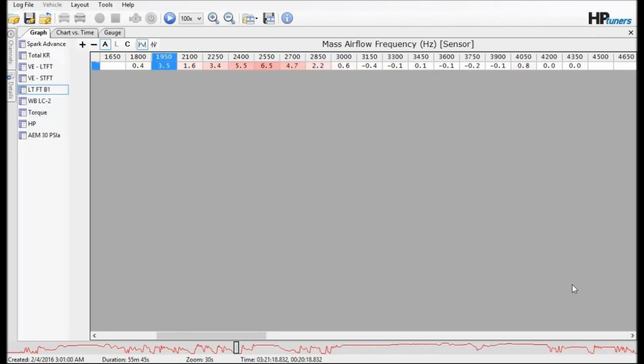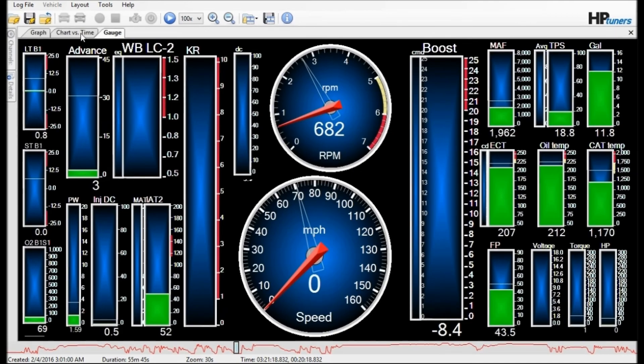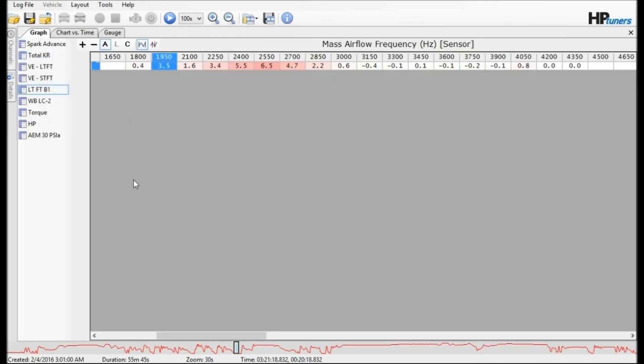First we're going to look at a log of the stock tune. Here's mass airflow versus long-term fuel trims. Down low, the 1950 is around idle, so just off idle looks like we're a little lean. Here's some counts of all the data points for that log. Just from the factory, slightly lean. Above a little higher under some power, light load and probably faster cruise, we're closer to zero.